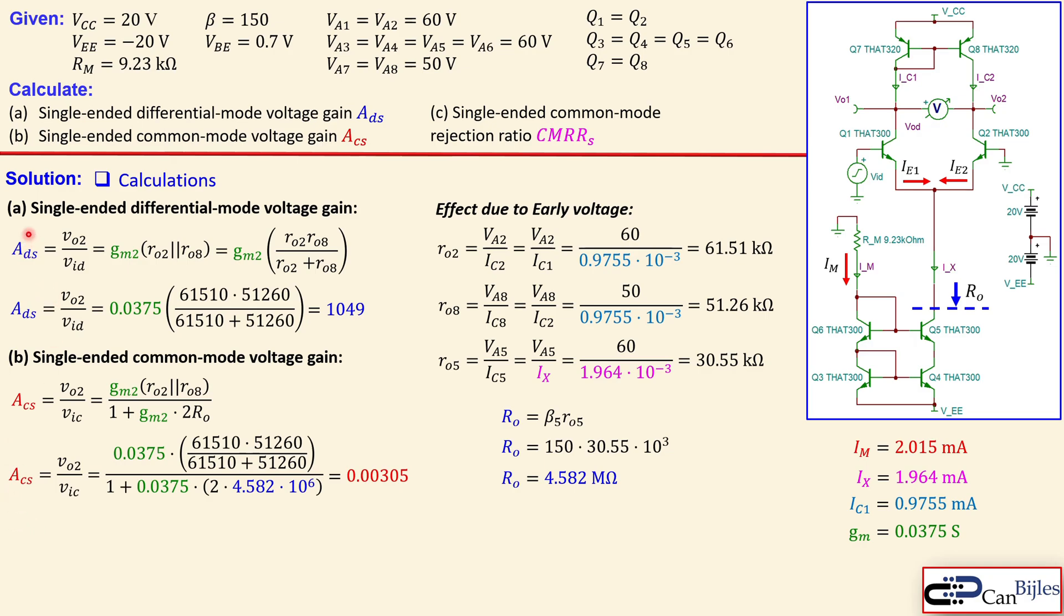What you also see in this example the questions A and B. That the gains are positive. Because when you measure at Q2 collector. And then you divide by the differential mode input. You don't have any phase inversion. We will see that shortly in the simulation result also.